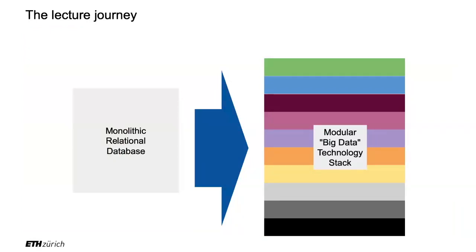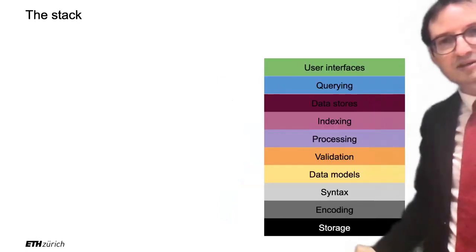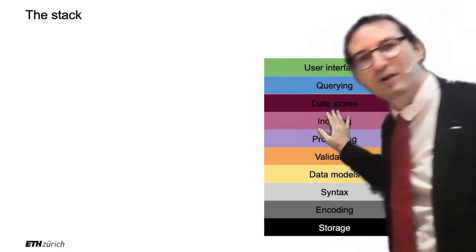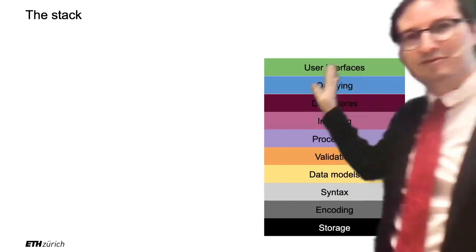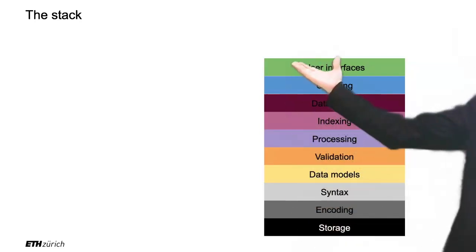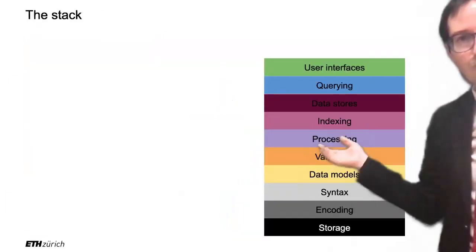We will keep in mind a few architectural principles in the way things are built. In the 1970s, relational databases were considered monolithic — a single piece of software you install on your laptop or server, on a single machine. We are going to rebuild the same thing in a modular way that runs on a data center. We'll want storage, syntax, data models, validation, processing, indexing, data stores, querying, user interfaces, and so on. We are going to work our way up that stack and reinvent all of these components so that, at the end, we more or less get the same functionality.